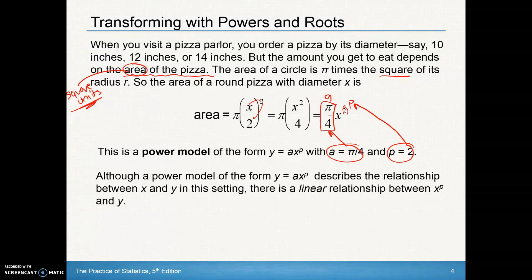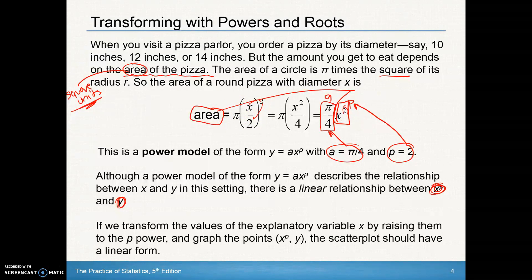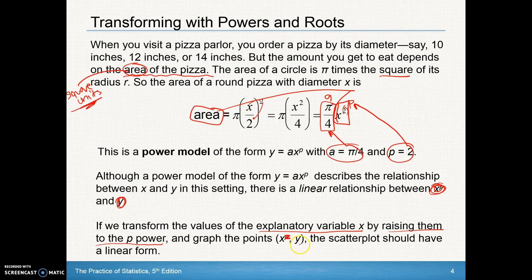So although a power model of the form y equals ax to the p describes the relationship between x and y in the setting, there is a linear relationship between x to the power and y. There is a linear relationship between this value here, the area and our x squared. So if we transform the values of the explanatory variable x, the explanatory variable x, knowing that this is a power model, this is a squared model, we could take each explanatory x and raise them to the p power. In other words, in our problem, it would be squared. If we squared the x's, we squared those x's, and then plotted them versus their y's, our scatter plot would become more linear.